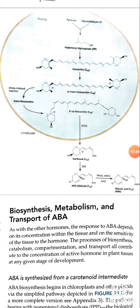Basically, ABA is called a stress hormone because it responds to overcome stress or unfavorable conditions in plants. So it is a stress-overcoming hormone, not a growth-regulating hormone like auxin or gibberellin. Thank you, students.